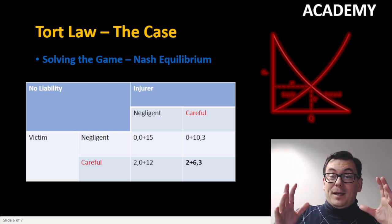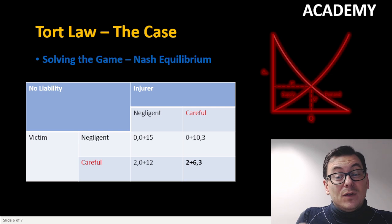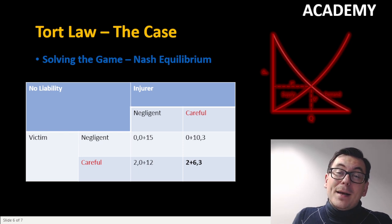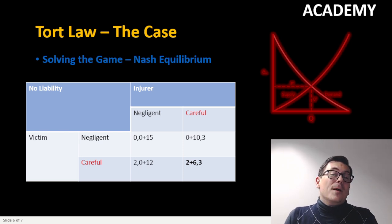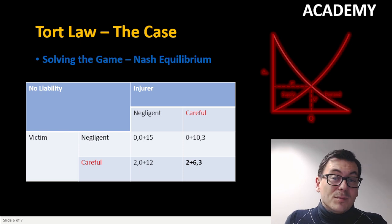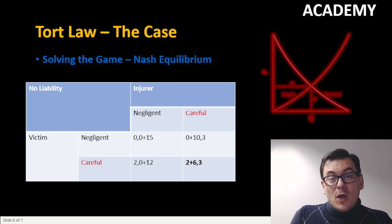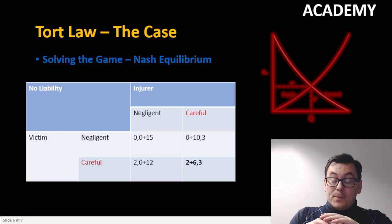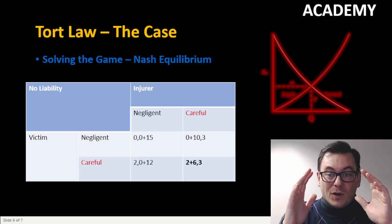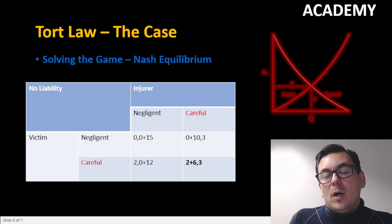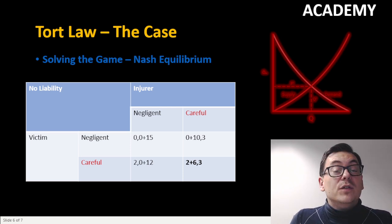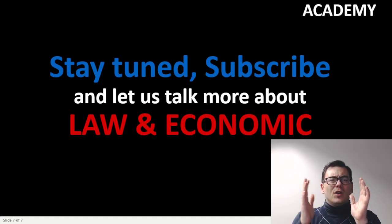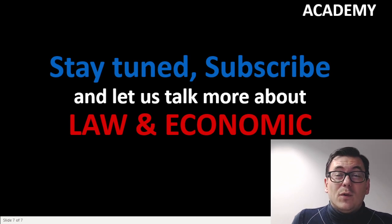Because of that, we can go back to the victim and say: since the injurer has a strictly dominating strategy of being careful, what is the best choice for the victim? That is of course also to be careful, because it reduces the cost from 10 to 8. This leads to a Nash equilibrium of both of them being careful, and the total cost is 2 + 6 + 3 = 11 — which from a societal perspective is the best we can actually get in this matrix model. By applying the negligence rule we end up in the most efficient result.